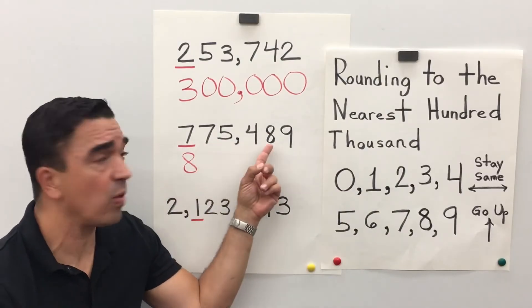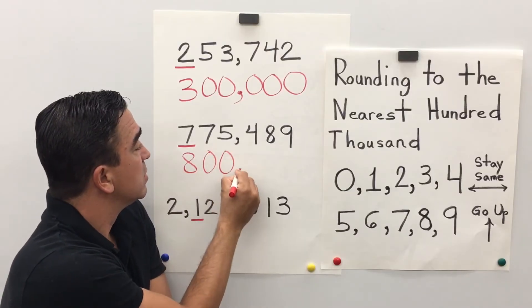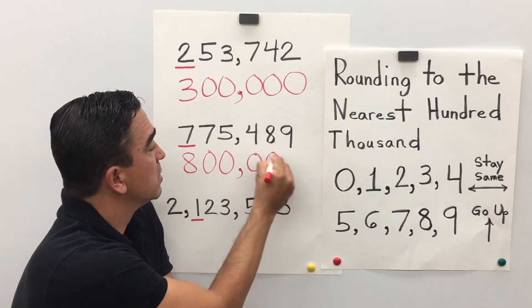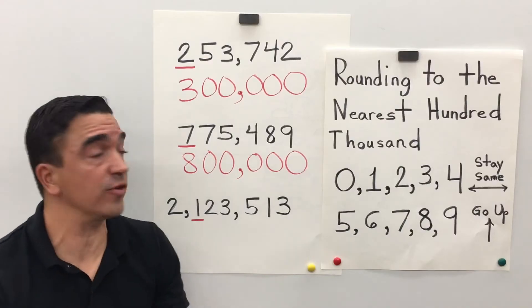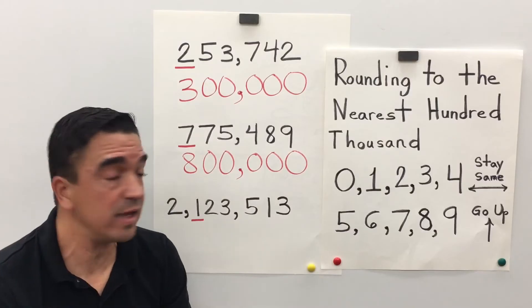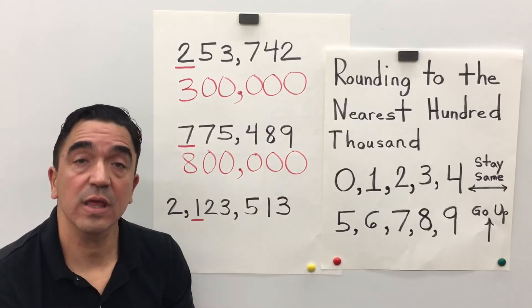1, 2, 3, 4, 5. So, 775,489 becomes 800,000.